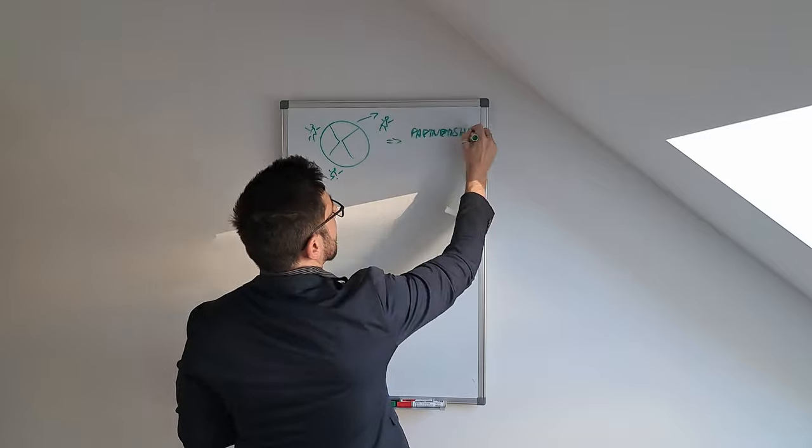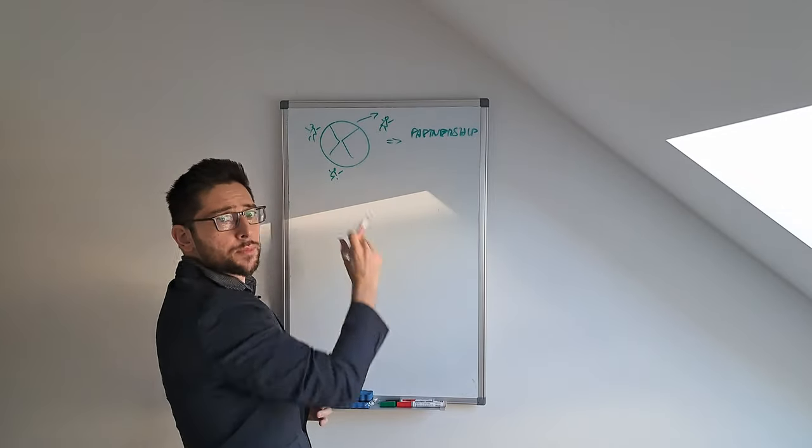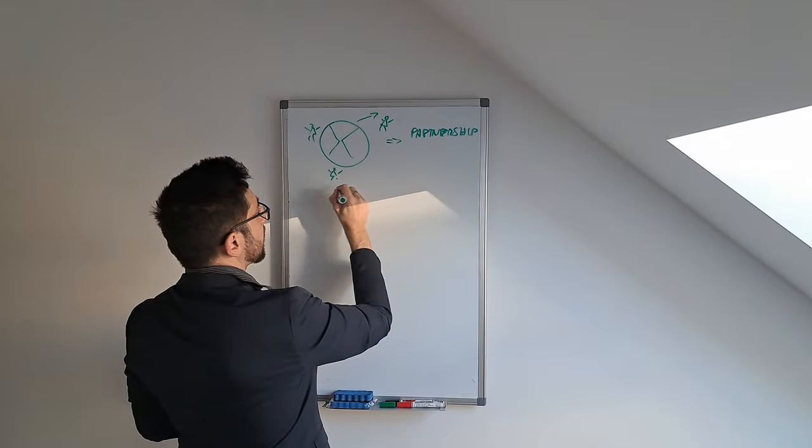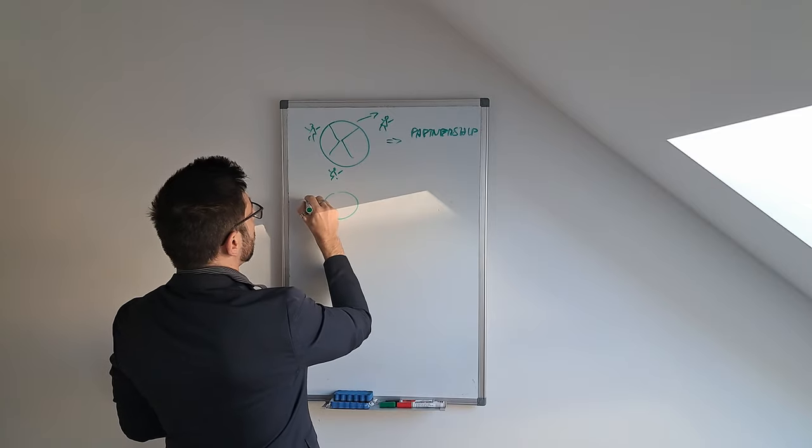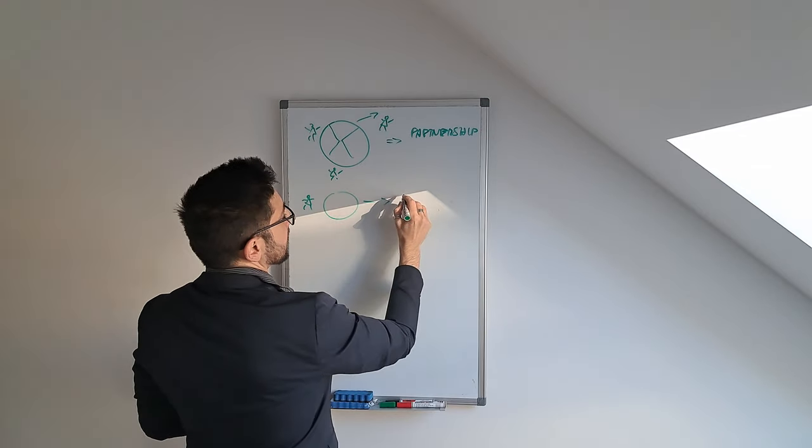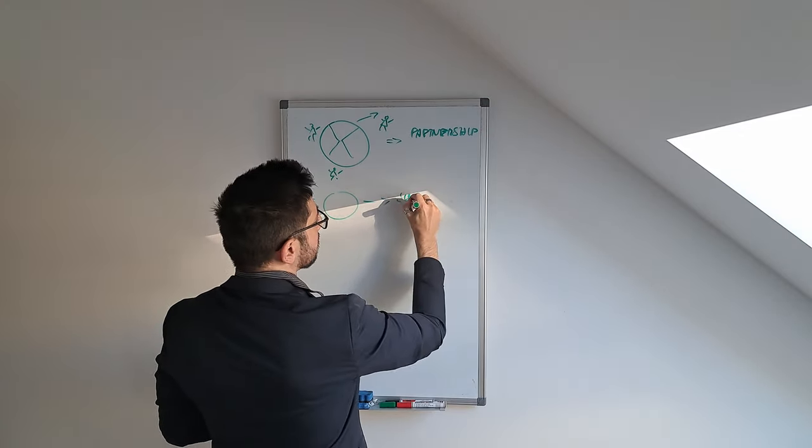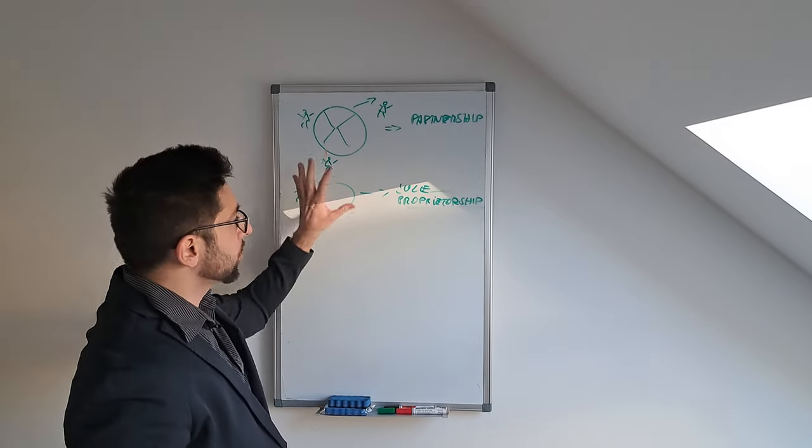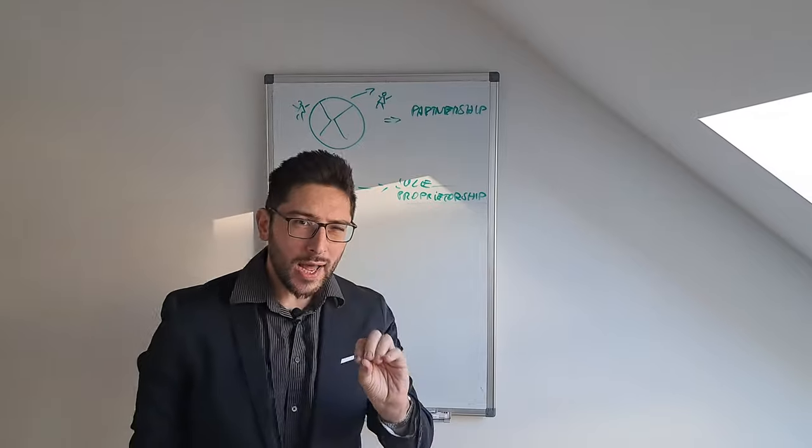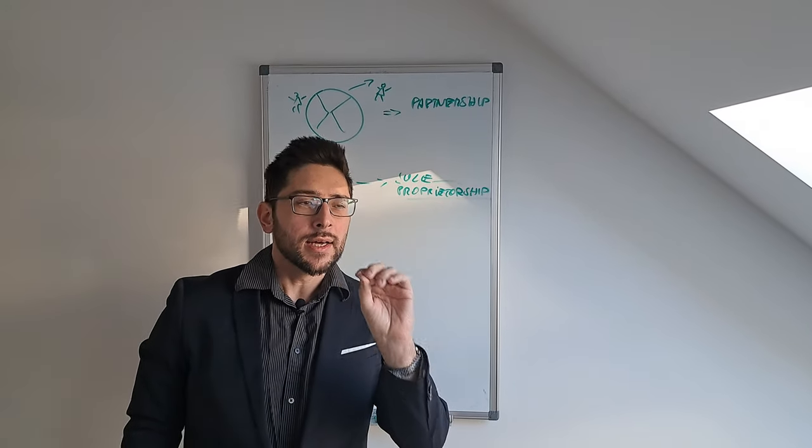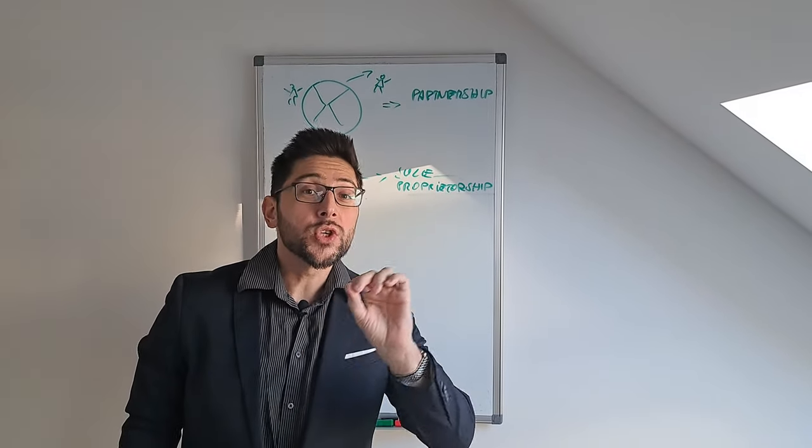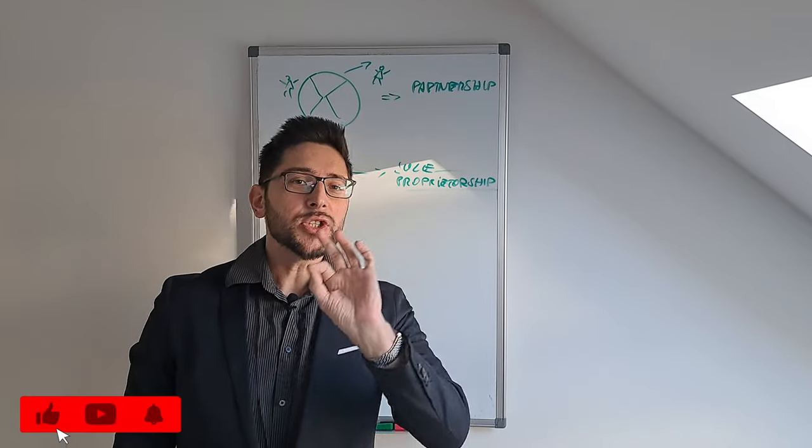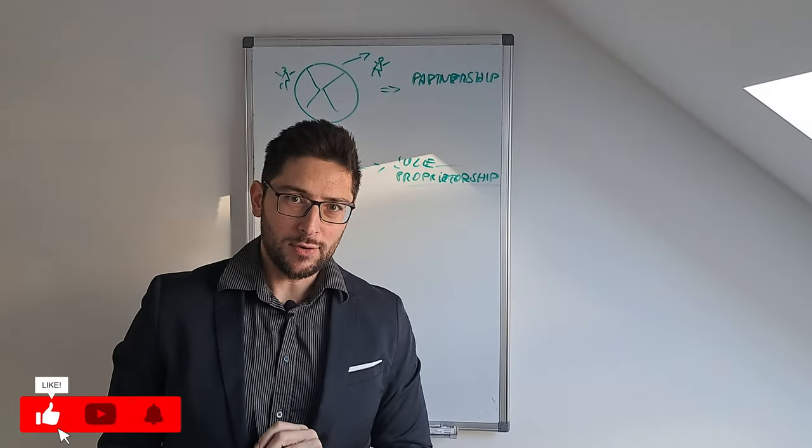The same structure composed by only one individual, one company composed by only one person, is what in Italian is known as sole proprietorship. Today I want to talk about these two types of companies and why you can use them to squeeze your taxes down, especially in certain situations and scenarios.